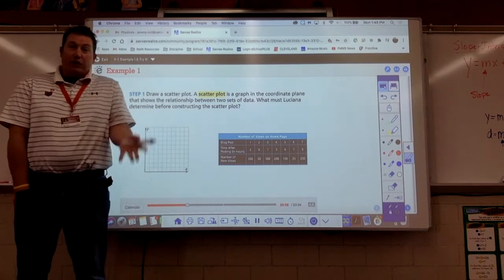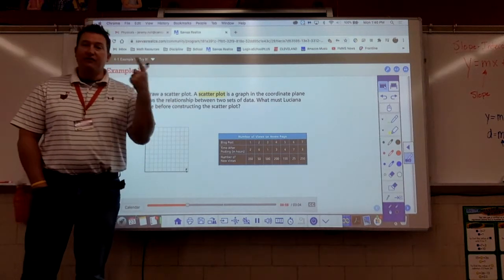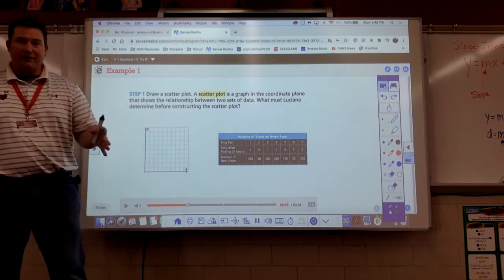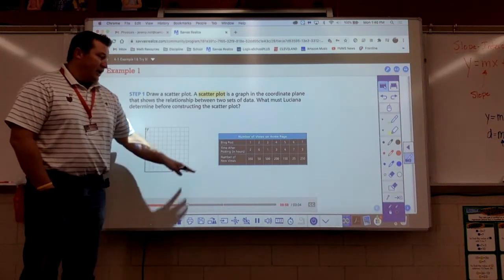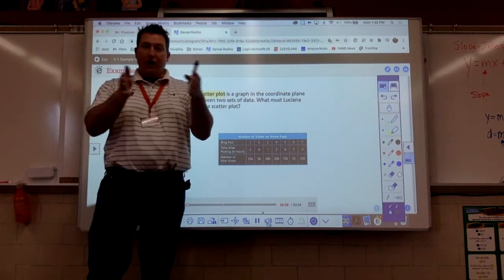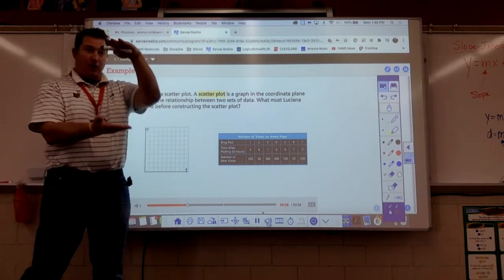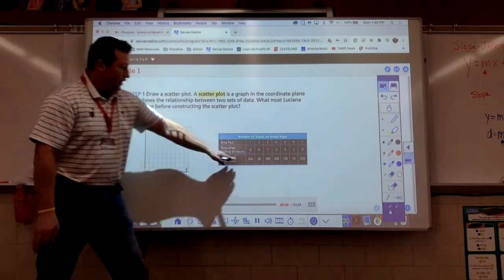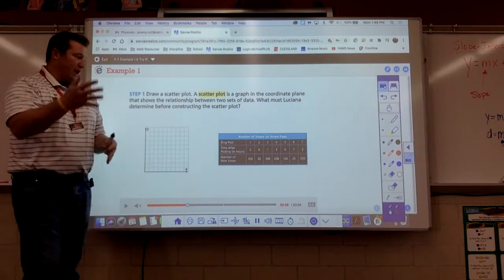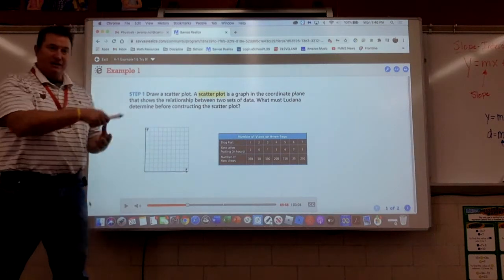But before we can make a graph, guys, what do we need to do? Label. Oh, yeah. We have to do labeling. We have to figure out what we're going to count by on both our X and our Y axis. Now, again, some of the examples in the book are a little bit dumb, a little bit confusing. But, you know, we just want to look at our numbers and say, hey, what's the lowest number? What's the highest number? Well, guys, our axis, right, our X axis has to include those numbers. Same thing for our Y axis. We've got to include all of these numbers here.